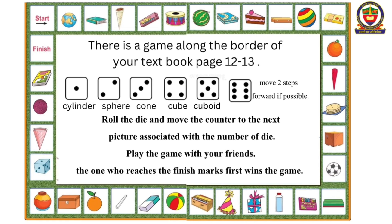Look at the picture. There is a game along the border of your textbook pages 12 and 13. Roll the die and move the counter to the next picture associated with the number on the die. Play the game with your friends — the one who reaches the finish mark first wins the game. If your die shows one, move to cylinder; two, move to sphere; three, move to cone; four, move to cube; five, move to cuboid; six, move two steps forward if possible. If you cross the finish line, you have to restart again.